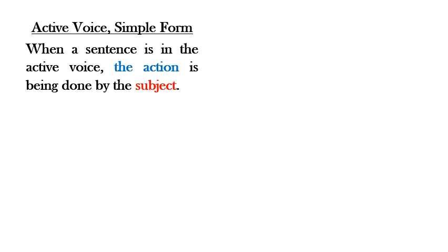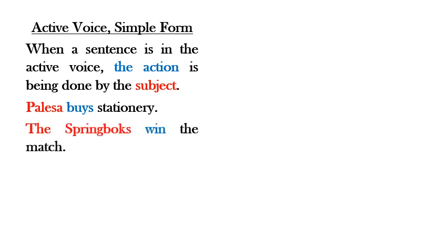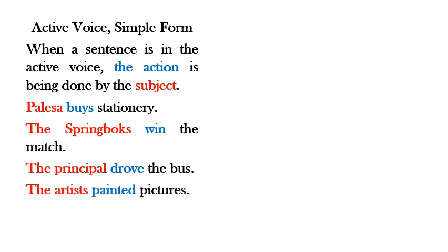A reminder: when a sentence is in the active voice, it is the subject that is doing the action. Here are some examples. Palasa is the subject and 'buys' is the action — 'Palasa buys stationery.' The Springboks as the subject with 'win' as the action. 'The principal drove the bus' — the principal is the subject and 'drove' is the action. And 'The artists painted the pictures' — the artists is the subject and 'painted' is the action.